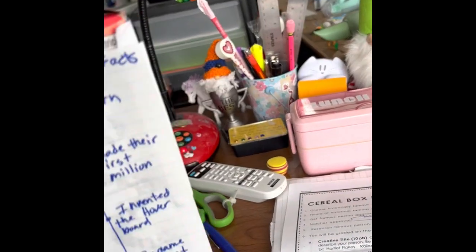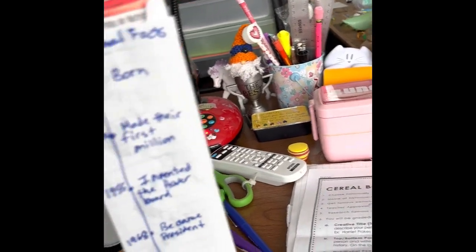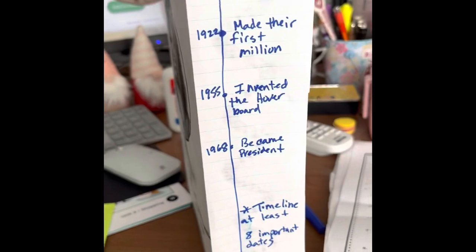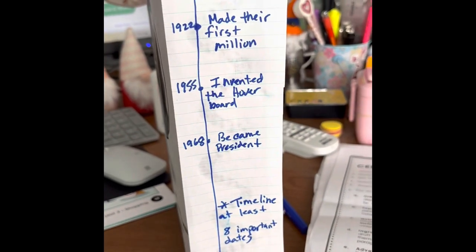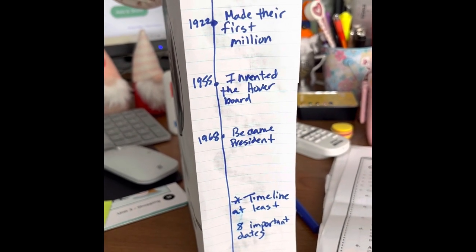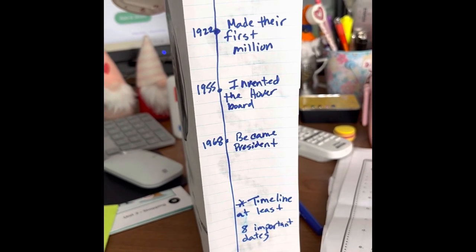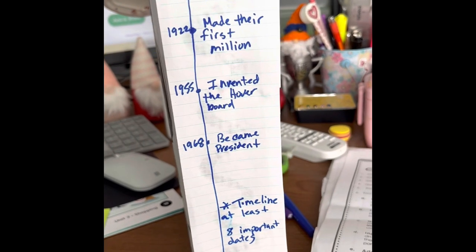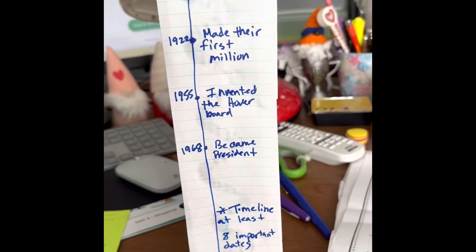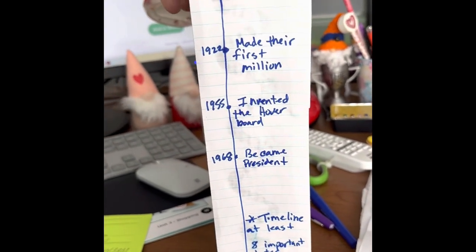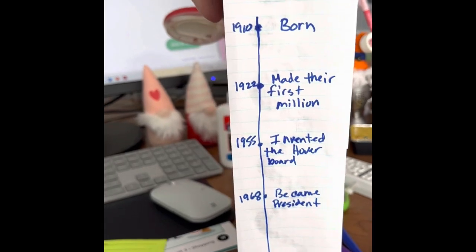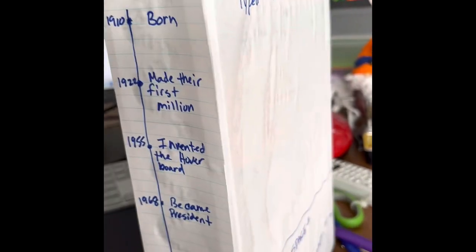My nutritional facts on the side — this is where we're going to put a timeline of at least eight important dates. These are things that were very important to them. Of course, we want to put when they were born and, if they died, when they died.